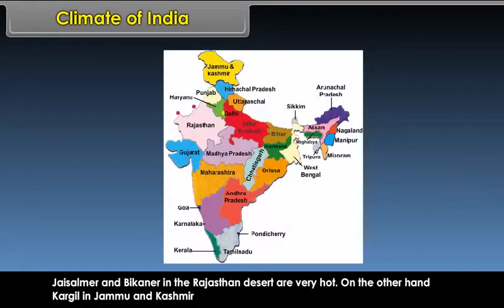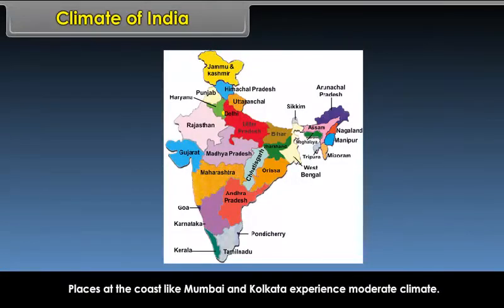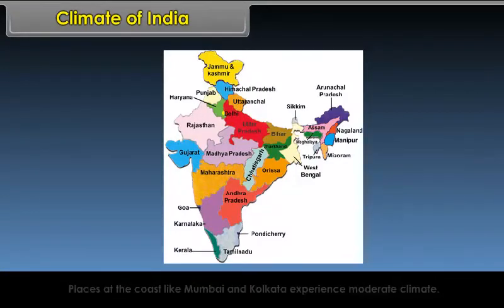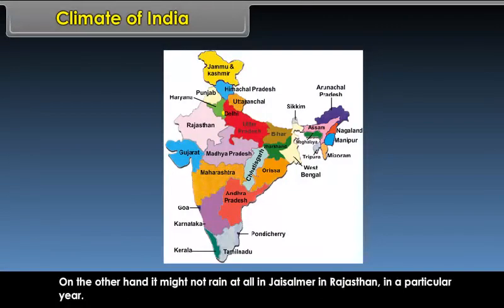Jaisalmer and Bikaner in the Rajasthan desert are very hot. On the other hand, Kargil in Jammu and Kashmir is freezing cold due to difference in altitude and location. Places at the coast like Mumbai and Kolkata experience moderate climate. Mawsynram in Meghalaya receives the world's highest rainfall, while it might not rain at all in Jaisalmer in a particular year.